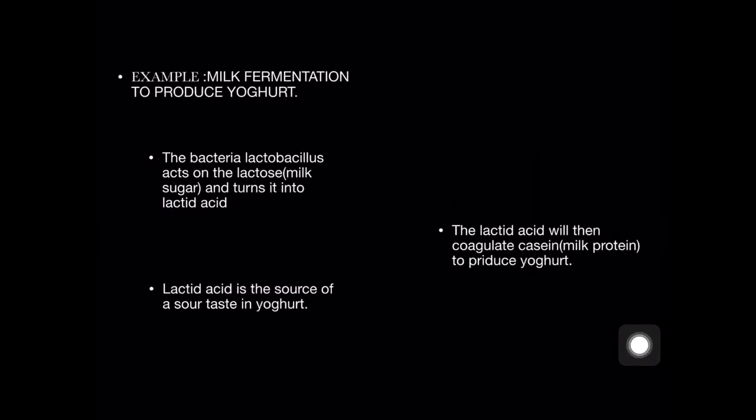We are going to explore an example of milk fermentation to produce yogurt. The bacteria Lactobacillus carries out milk fermentation to produce yogurt. Lactobacillus acts on the lactose milk sugar and turns it into lactic acid. The lactic acid will then coagulate casein milk protein to produce yogurt. Lactic acid is the source of the sour taste in yogurt.